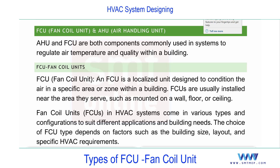An FCU is a localized unit used to condition air in a specific area or zone within a building. Compared to the AHU, which can supply air for multiple spaces, the FCU serves one space. FCUs are generally installed near the area they serve — wall-mounted, floor, or ceiling. For example, the high-wall unit is on the wall, there is a floor type, and the cassette is a ceiling example.